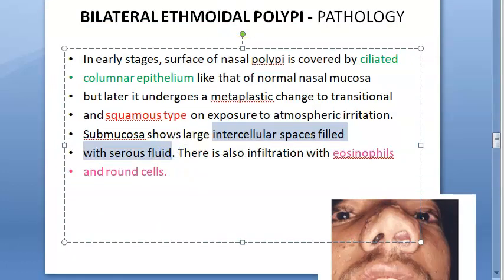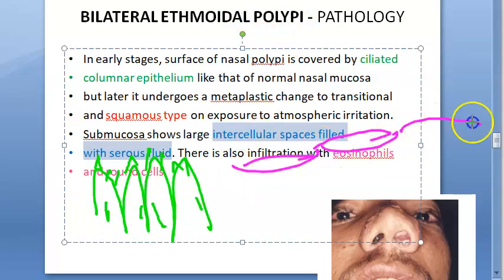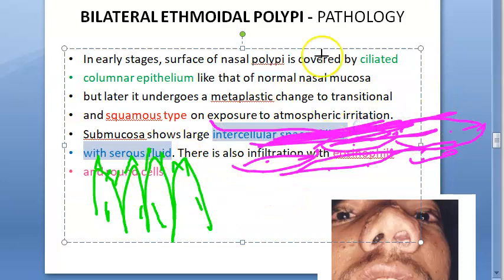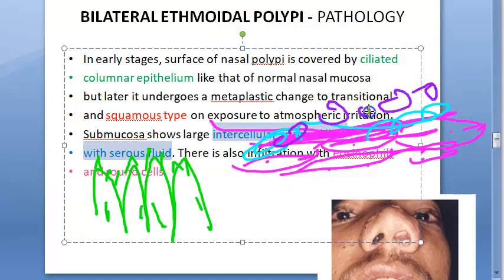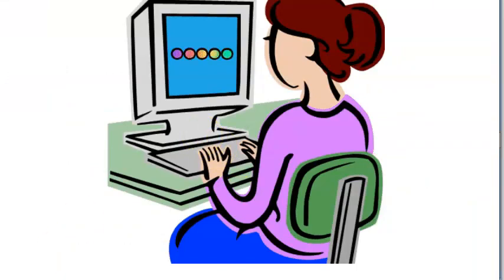In pathology, initially there is ciliated columnar epithelium, which is normal. It then undergoes metaplasia to squamous or transitional-to-squamous type epithelium due to exposure to atmospheric irritation and allergy. The submucosa shows intracellular spaces filled with serous fluid, with eosinophils and round cells infiltrating — and so the polyp develops.